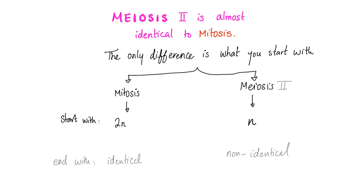Meiosis two is almost identical to mitosis — almost identical is not the same as identical. We have very few differences. In mitosis we started with 2N, but in meiosis two we start with just 1N. And there's another difference in the end result: in mitosis you get identical cells, but in meiosis you get non-identical cells.